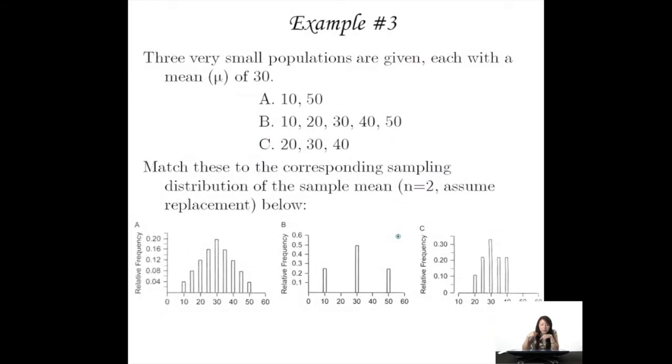All right, example three. Three very small populations are given, A, B, and C, each with a mu of 30. So this is a truly small population, there's only two things, two items in this population. There's only five items in this one, and only three items in this one. Match these to the corresponding sampling distribution of the sample mean. N equals two. Assume replacement. So if you draw two out, you put them back, or else after once you'll be gone.